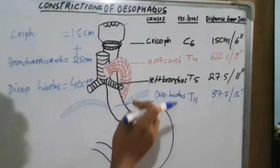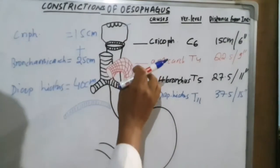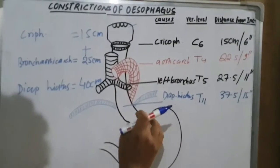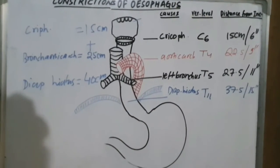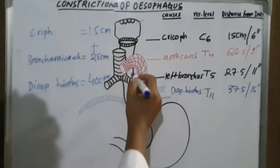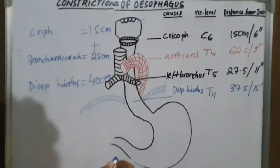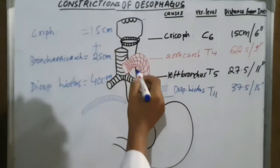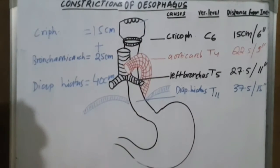These distances are important when passing instruments into the oesophagus, such as an oesophagoscope or a flexible endoscope.